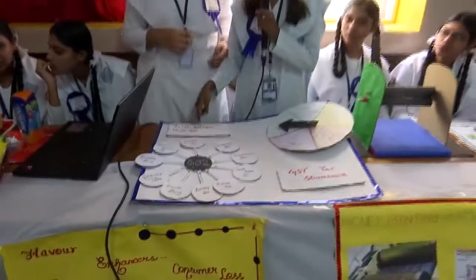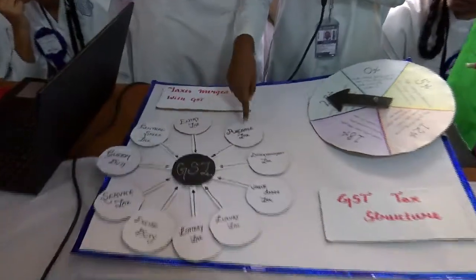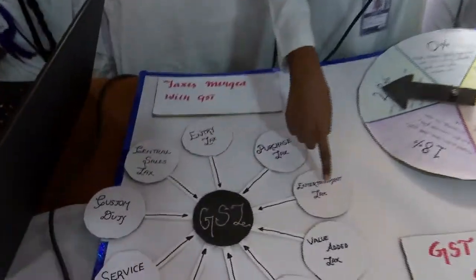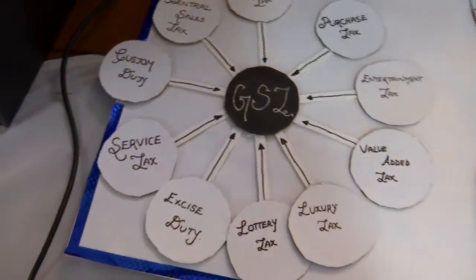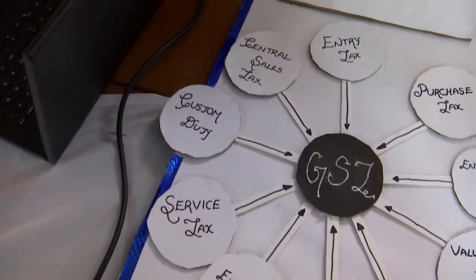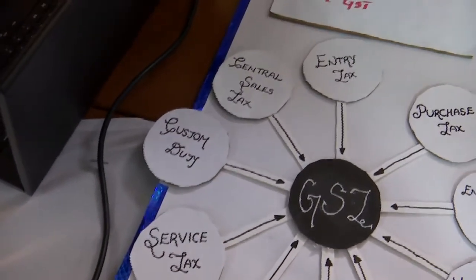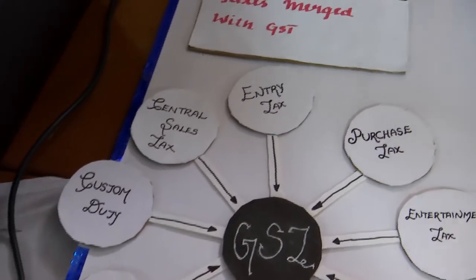Taxes merged with GST are entry tax, purchase tax, entertainment tax, value added tax, luxury tax, lottery tax, excise tax, services tax, custom tax and central sales tax.